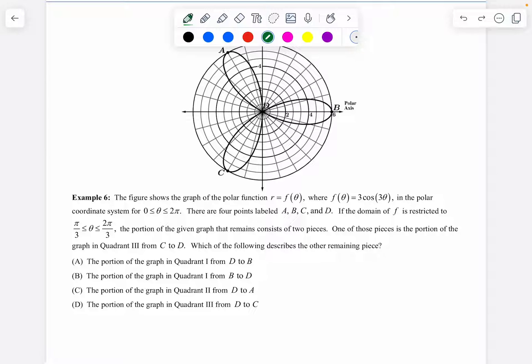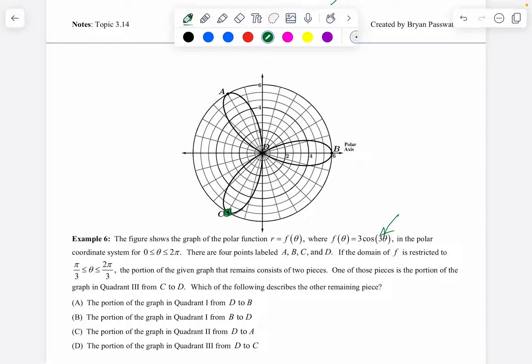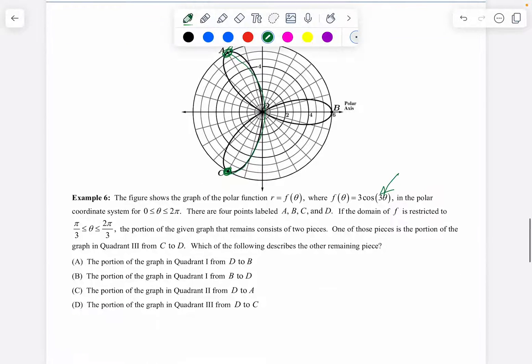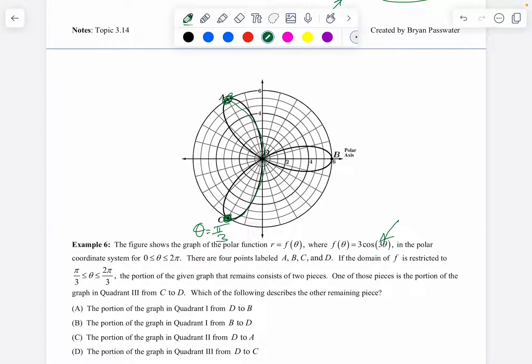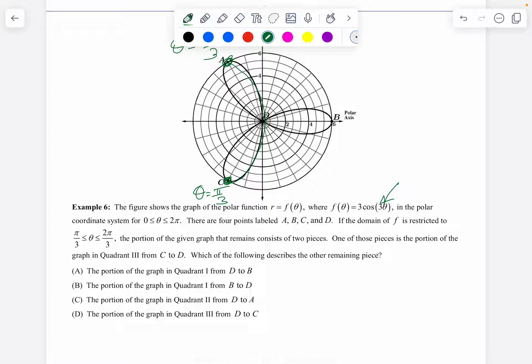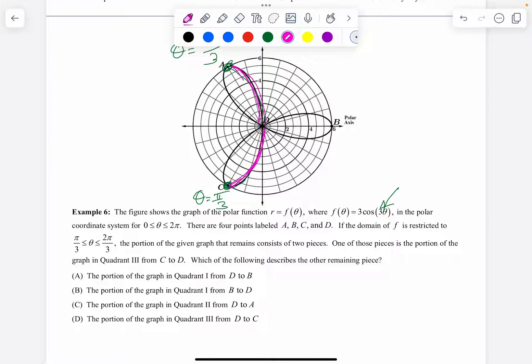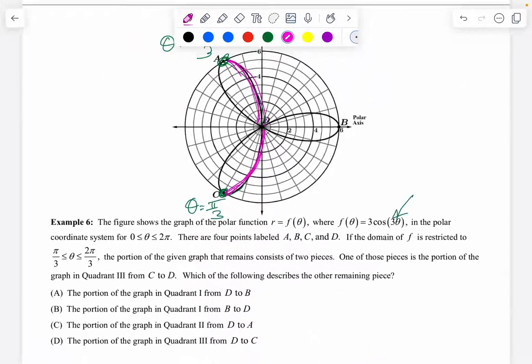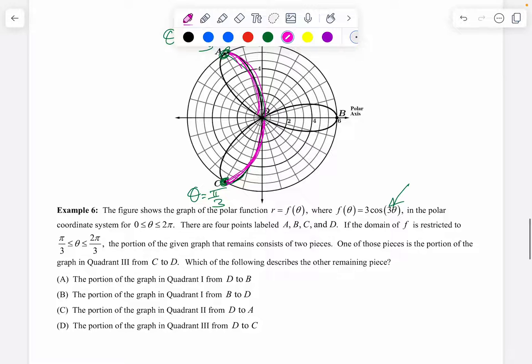Okay. The figure in the graph shows that it's another rose with three petals, which is the three here tells us we have three petals. The domain is restricted to pi over three to two pi over three. Okay. Well, we just said a second ago that this is pi over three. And so this is going to get us all the way up here is going to be two pi over three. So this is when theta equals pi over three. And this is when theta equals two pi over three. Okay. So then what is it saying? If the domain of F is restricted to that, okay, the portion of the graph remains, the graph that remains consists of two pieces. One of these pieces is the portion in quadrant three from C to D. Okay. That's this little piece, which of the following describes the other piece. Well, it's this part, up here from, what is that? Is that D at the center? I've written too much. Well, I think so. Okay. So D to A is in quadrant two.